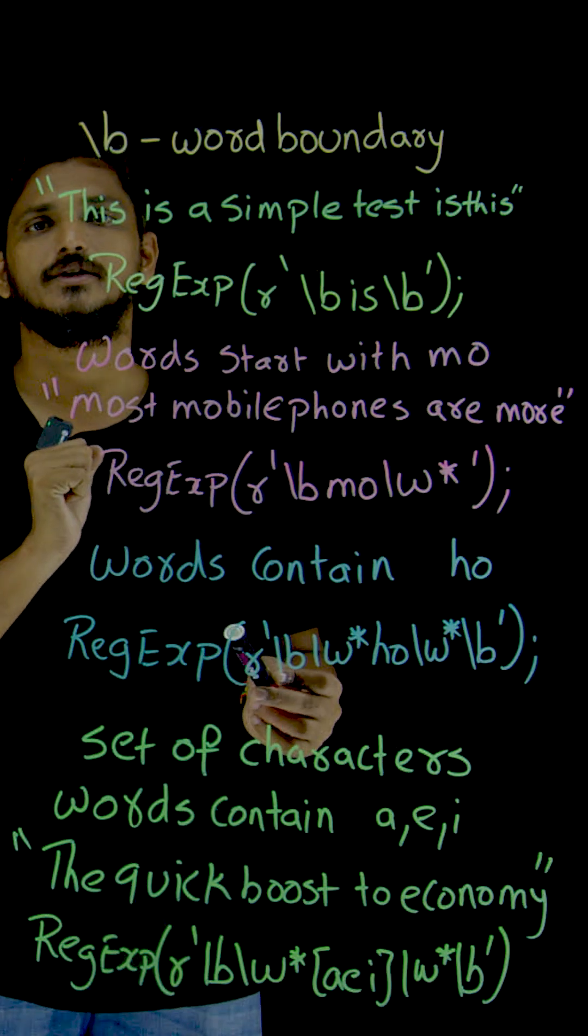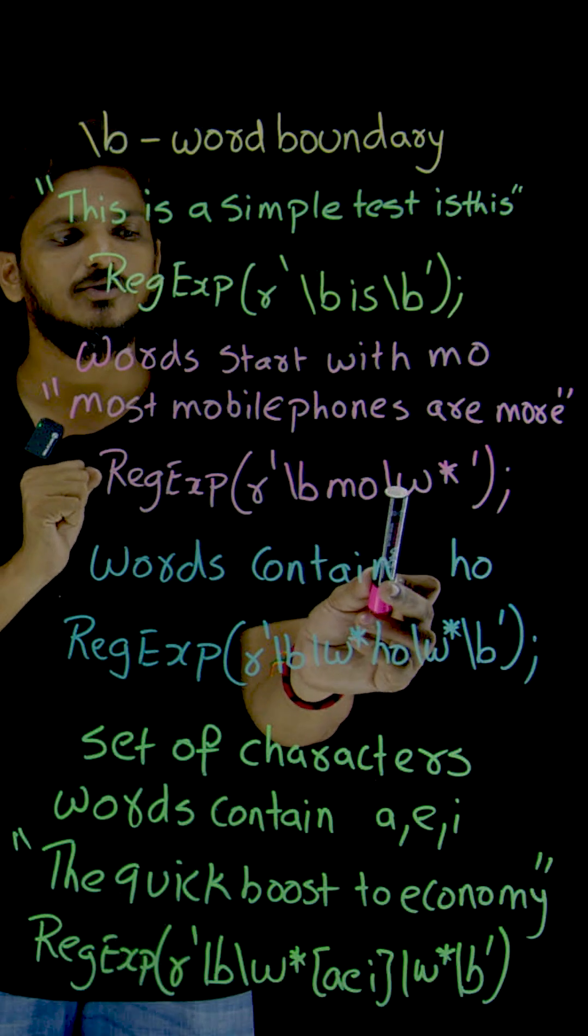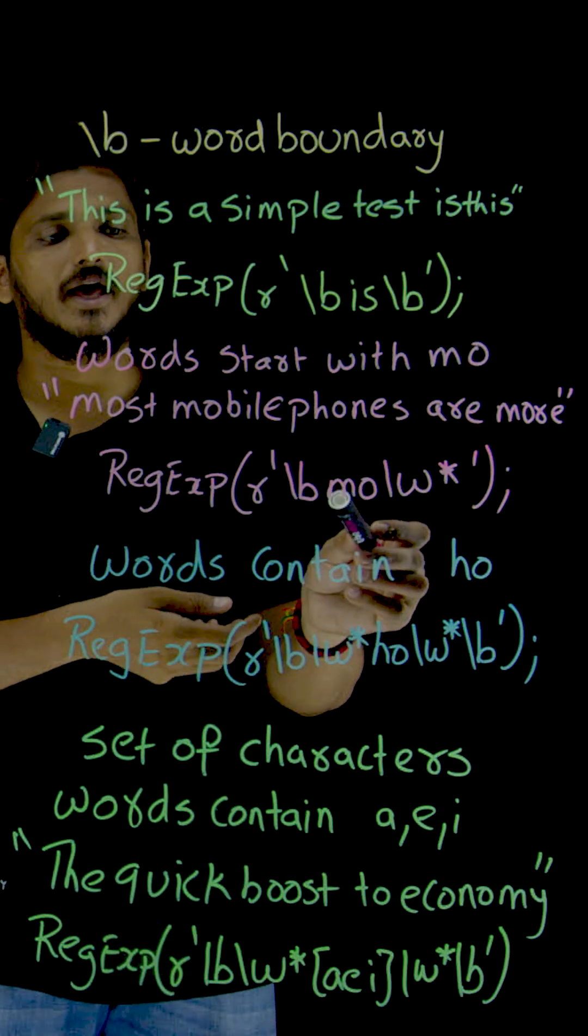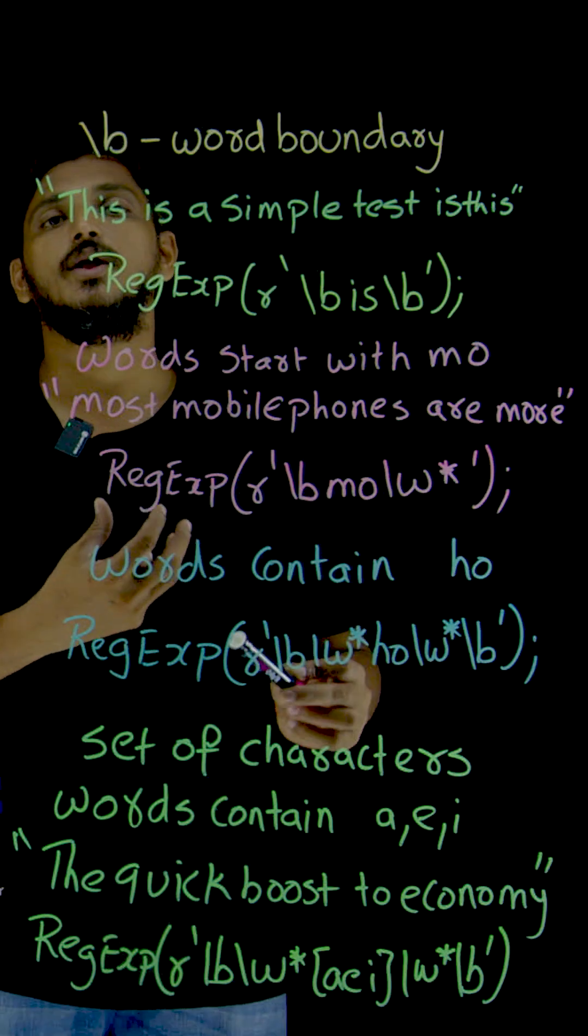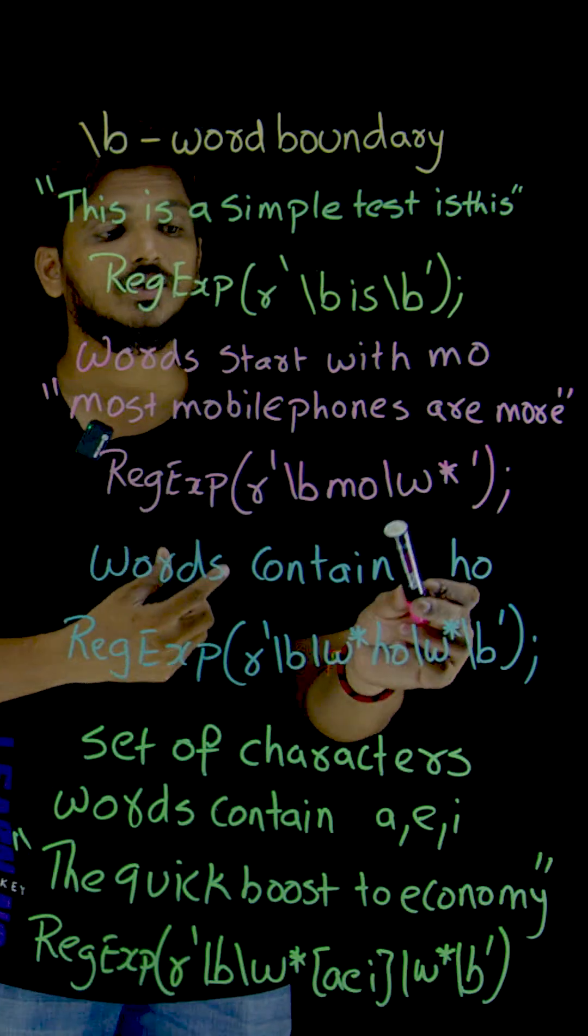You need to identify it. Then slash W is going to take zero characters. After M-O, slash W takes zero characters. That's why star is used.